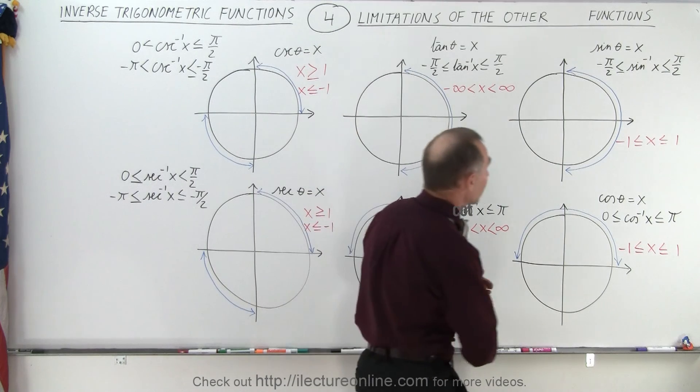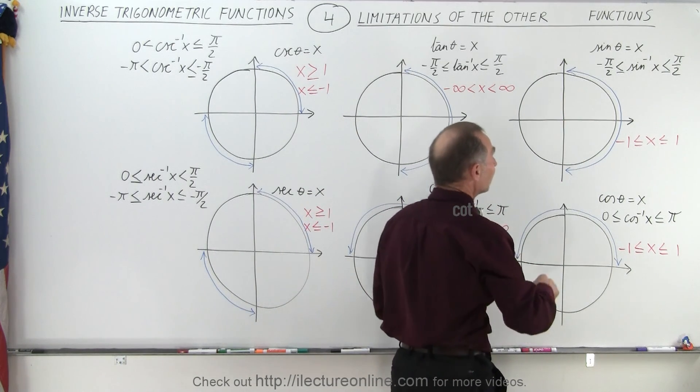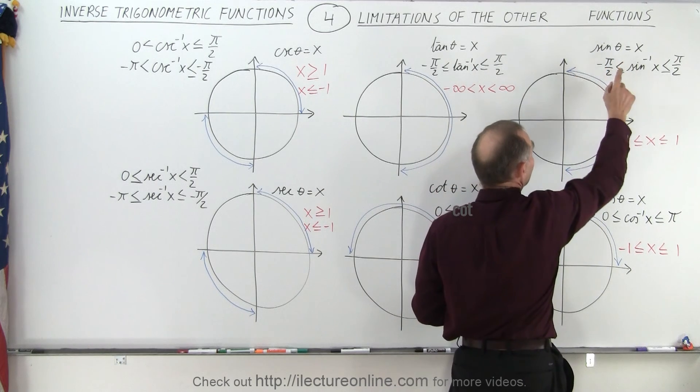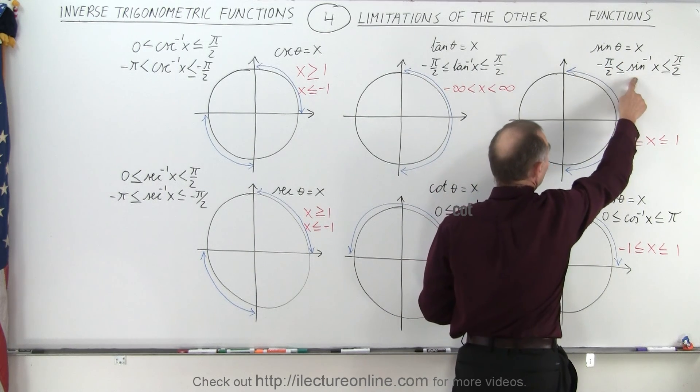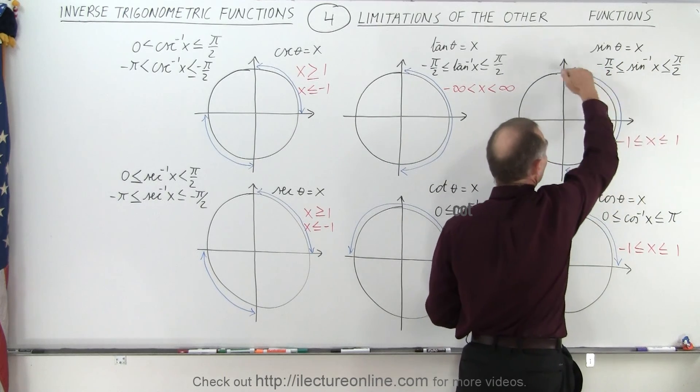Notice we are now pretty familiar with the inverse sine and the inverse cosine functions. If we have the sine of theta equal x, then we know that the inverse sine of x has to be limited between minus 90 and plus 90 degrees.